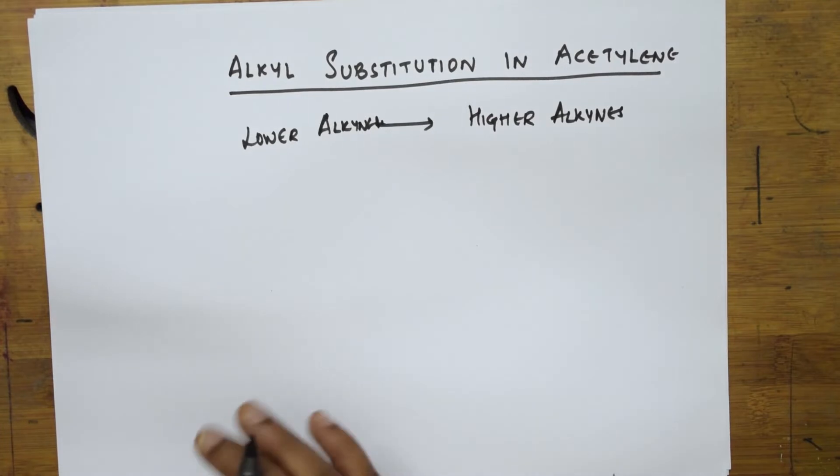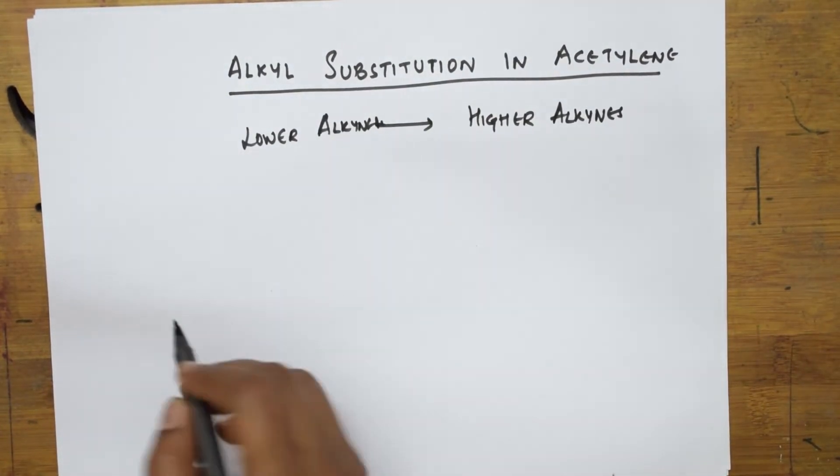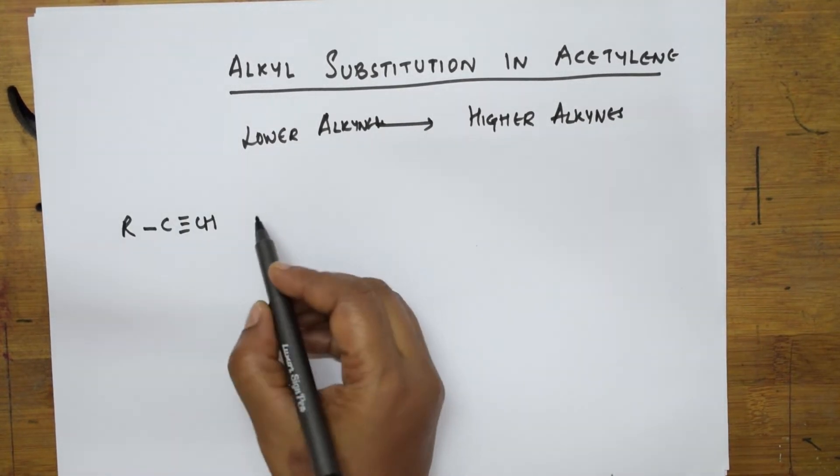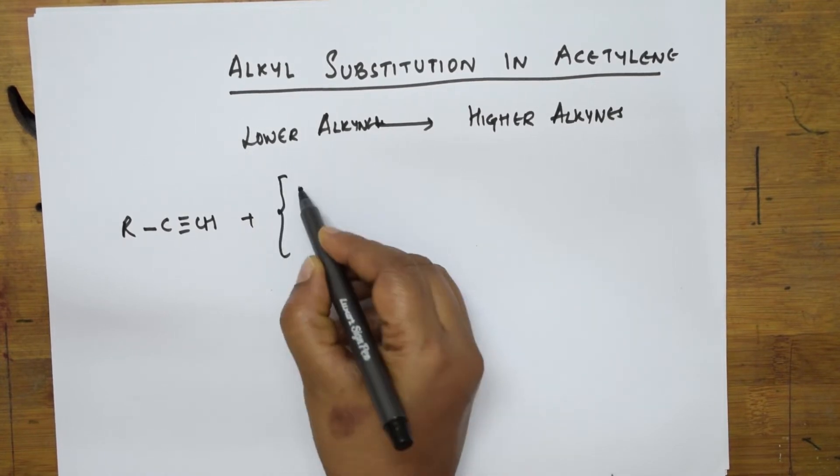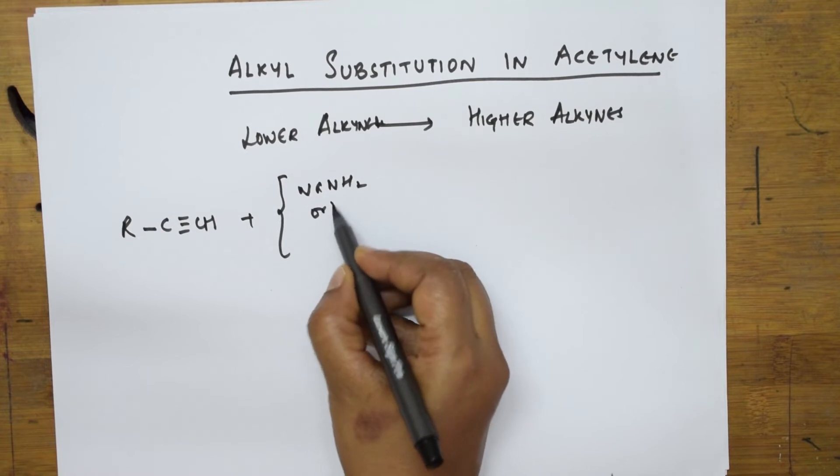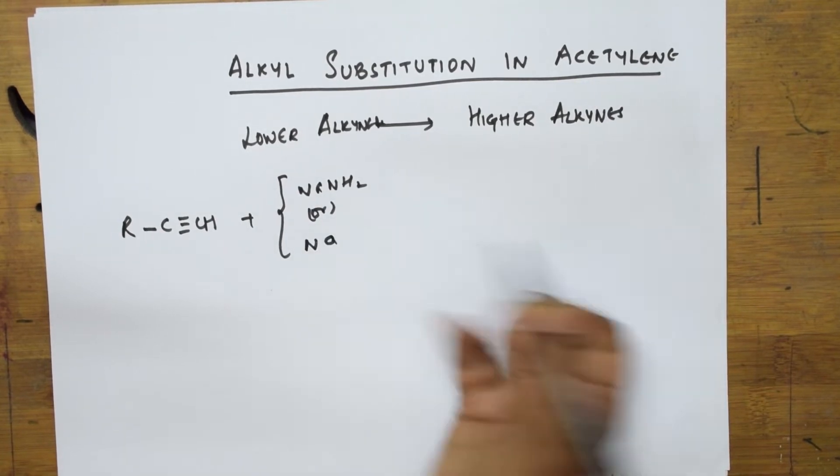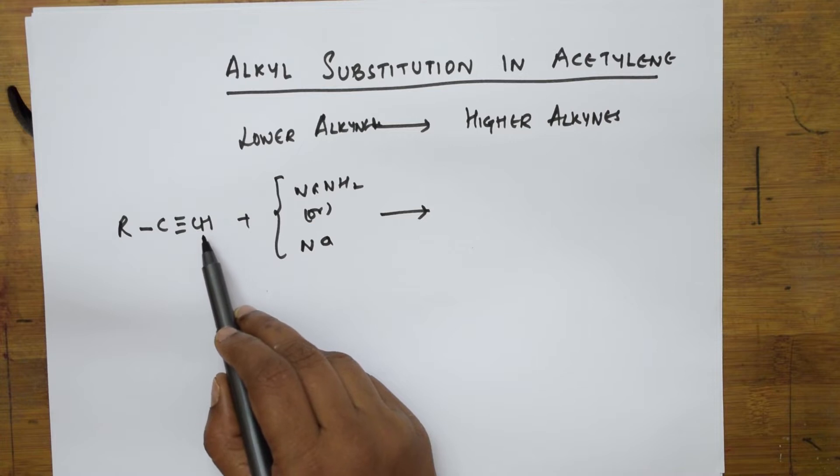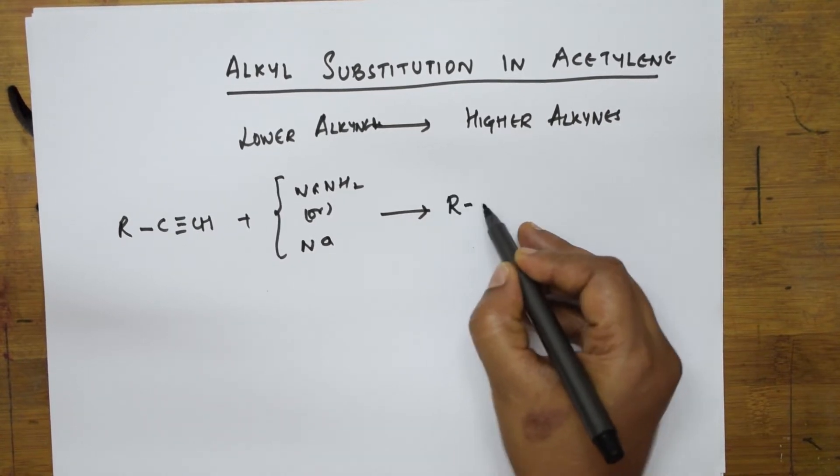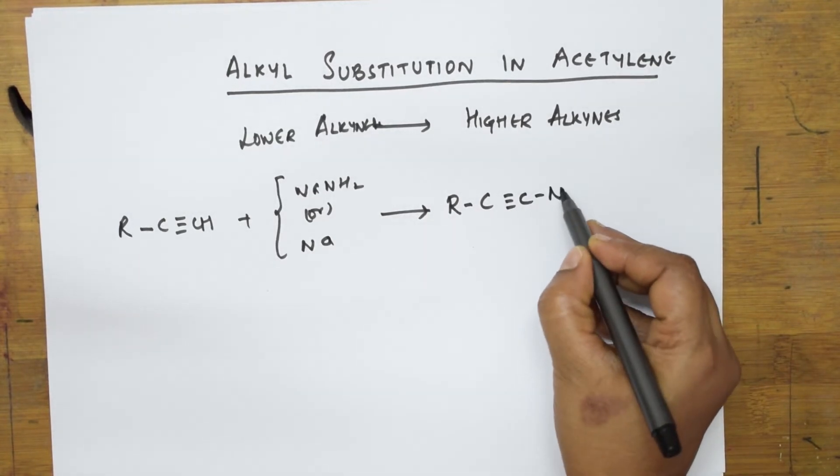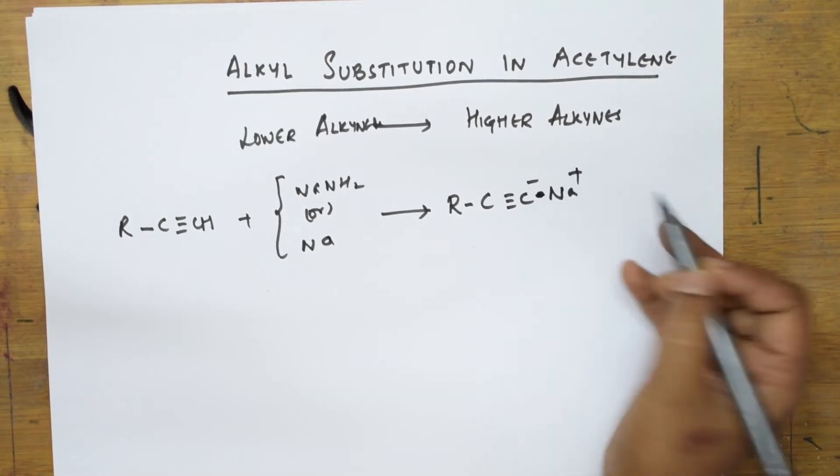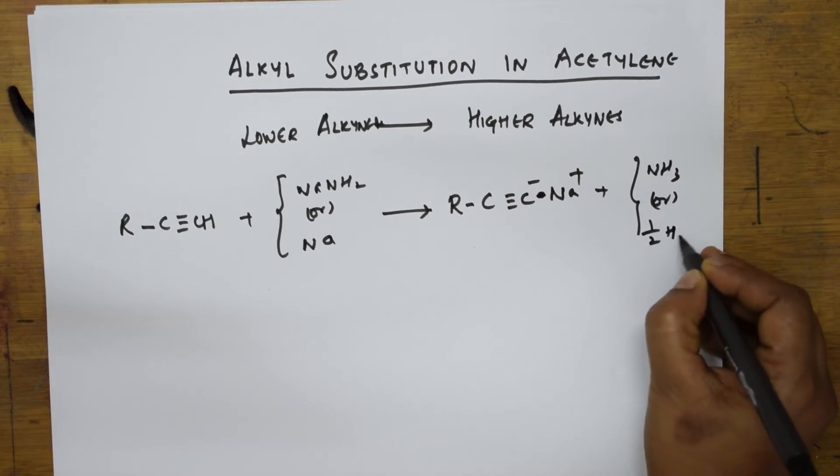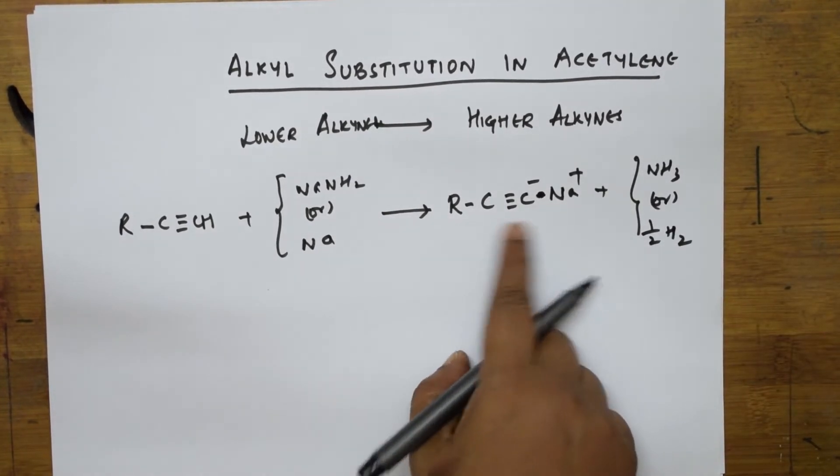Let's see one mechanism then go to the reactions. I have an alkyne and I'm going to treat it with either Na in NH3 or sodium amide. This terminal hydrogen is replaced by sodium, so we get R-C≡C minus with Na plus. Apart from that we have NH3 or half H2 evolved out.